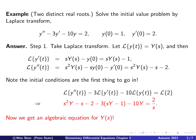So let's take the transform of the equation. Using the linearity property, we can take the transform of each term and pull out the constant. The left-hand side is the transform of y double prime, minus 3 times the transform of y prime, minus 10 times the transform of y. The right-hand side is the transform of 2, which is 2 times the transform of the constant 1.